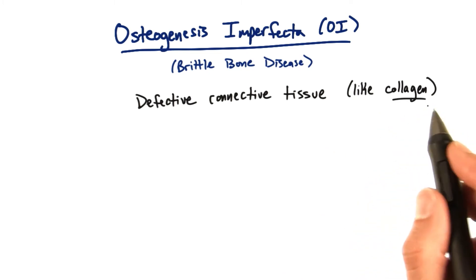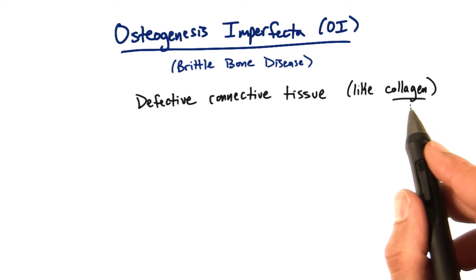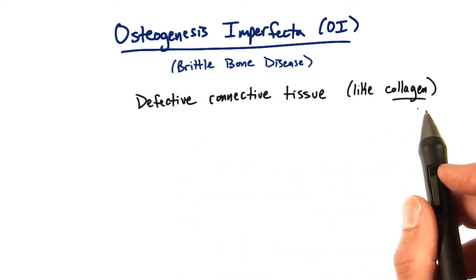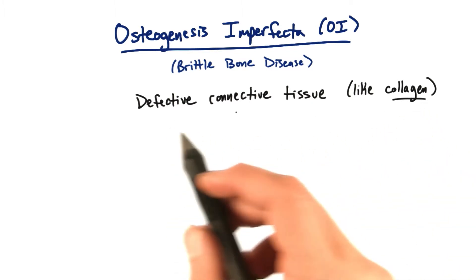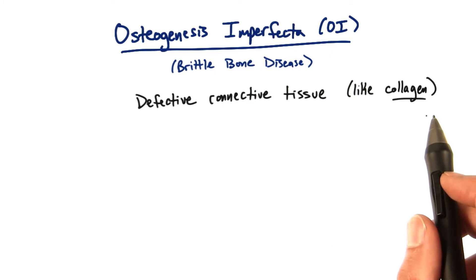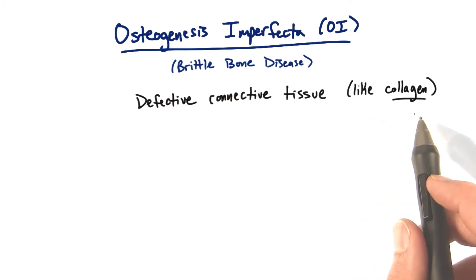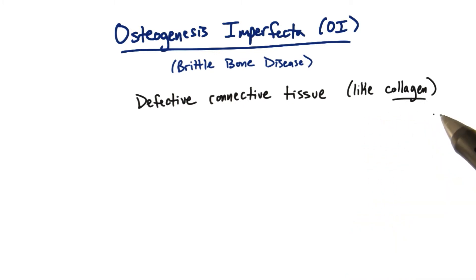You may have heard of collagen before, maybe even in commercials. Collagen is a huge and important structural protein in your cells — it's what makes your skin so pliable and durable at the same time, and it serves many important structural purposes. In the case of osteogenesis imperfecta, it doesn't work the way it normally should.